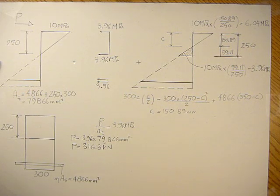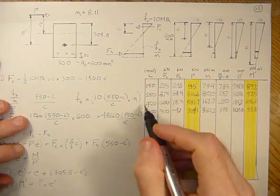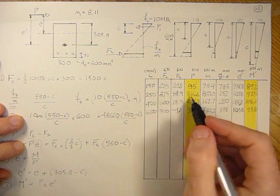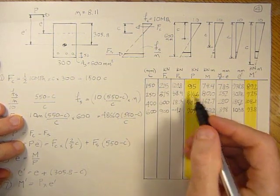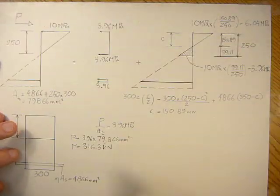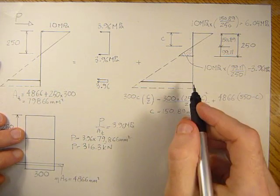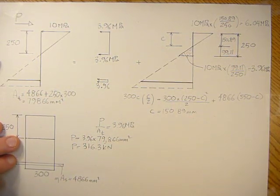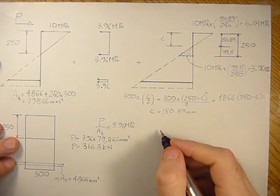When we compare it to the table from the force method, it comes bang on 316.6 kilonewtons. So we're on the right track with this P over A, M over I approach - it can work.